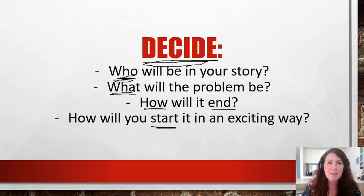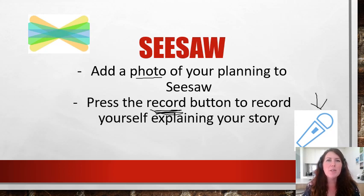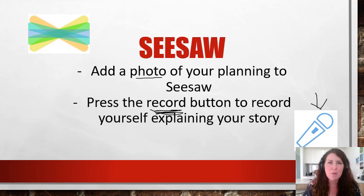The next step for today is to add a photo of your planning and brainstorming to Seesaw. Once you've added the photo, press the record button that looks like a microphone, and record yourself explaining the story to your teacher — all the ideas you had, how you're going to end it, what's the problem, what's the start — so they can see your thinking and give you a little bit of feedback before you start writing. Pause this video now and go and add a photo and a recording about your story to Seesaw.